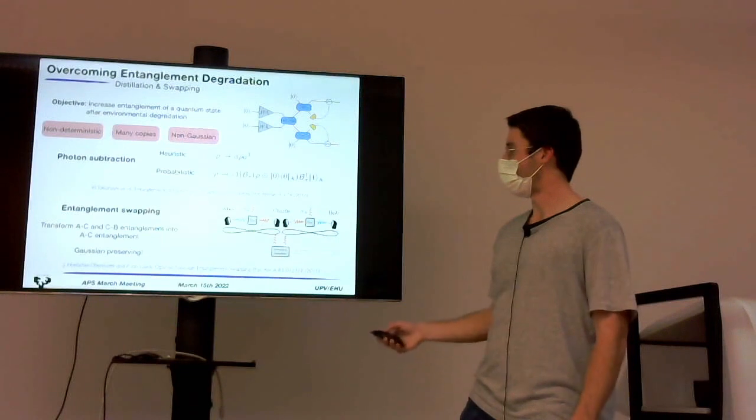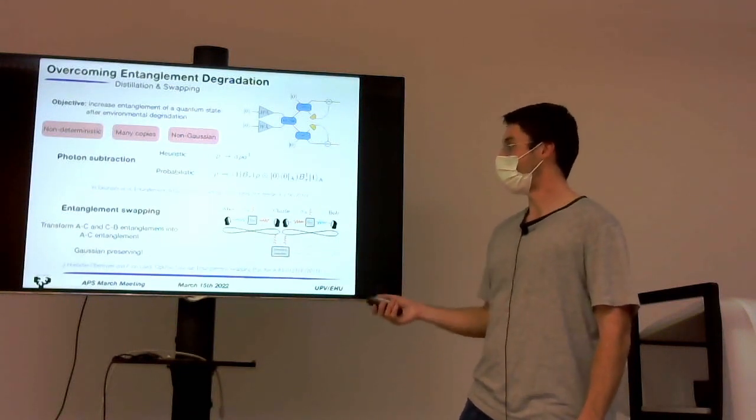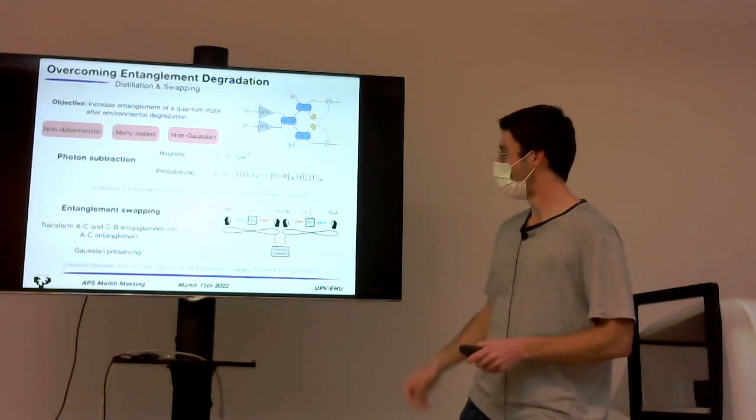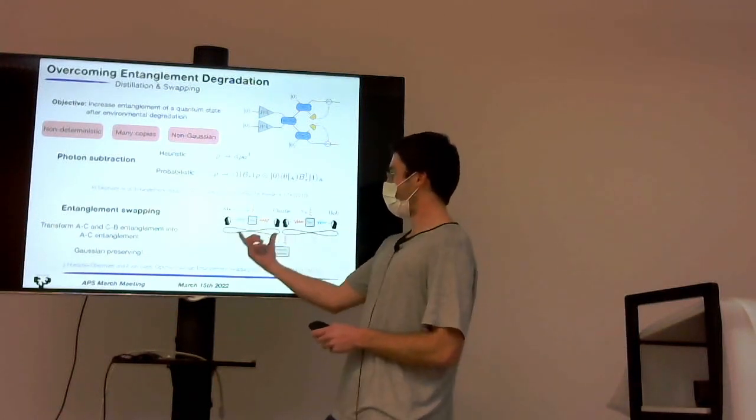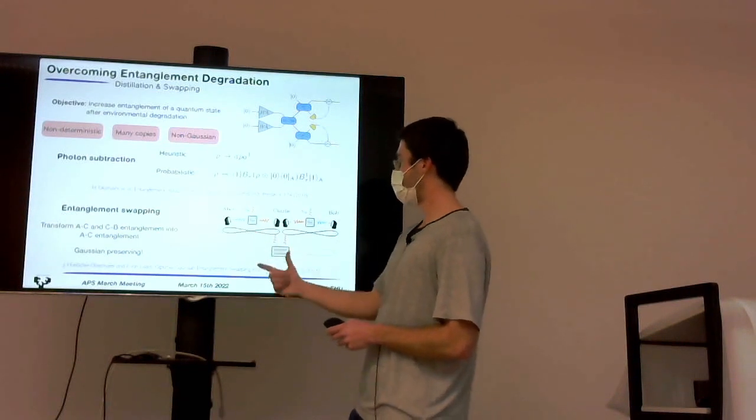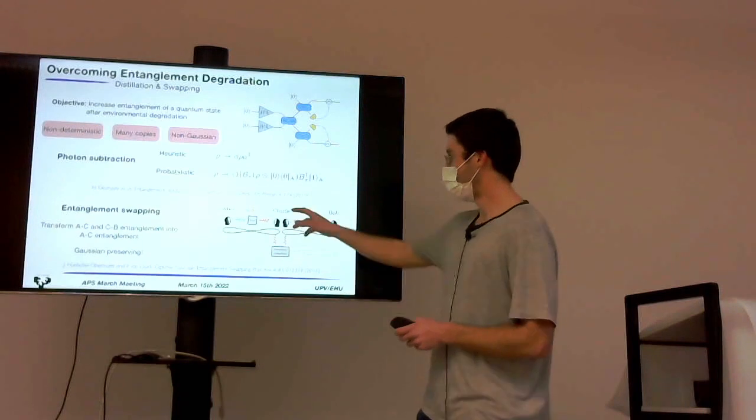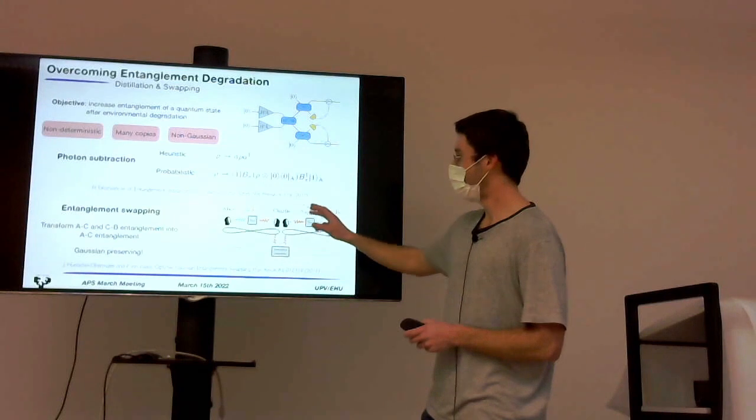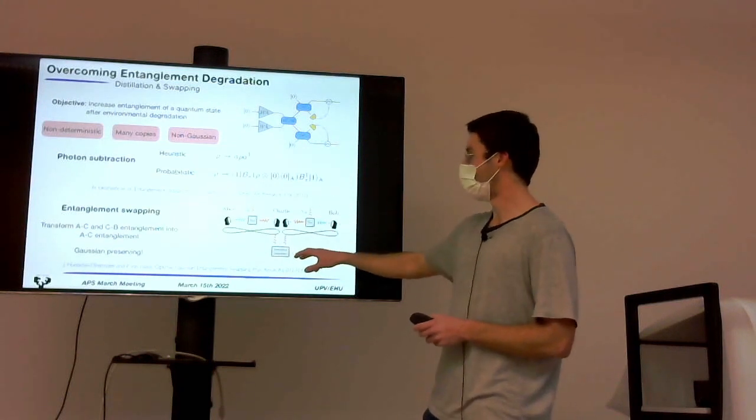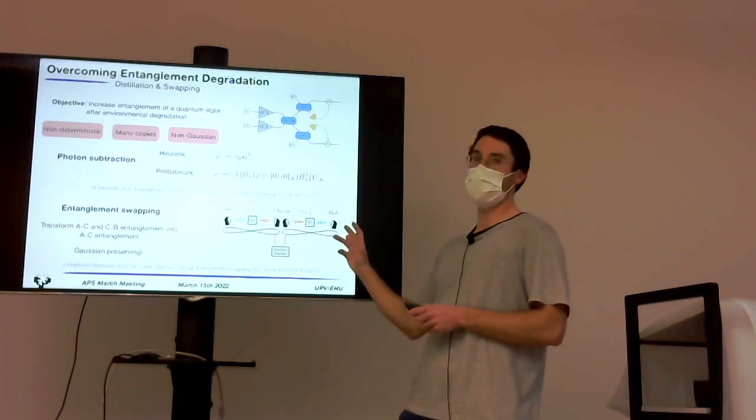Another protocol that we could consider is called entanglement swapping. It's Gaussian preserving, and it attempts to connect, in this case, Alice and Bob. We assume that Alice and Charlie share a bipartite entangled state, and Charlie and Bob share another one, so Charlie can make Gaussian, in this case, homodyne detection, which are Gaussian measurements, on the two modes that he holds, and then an entangled state between Alice and Bob is generated.